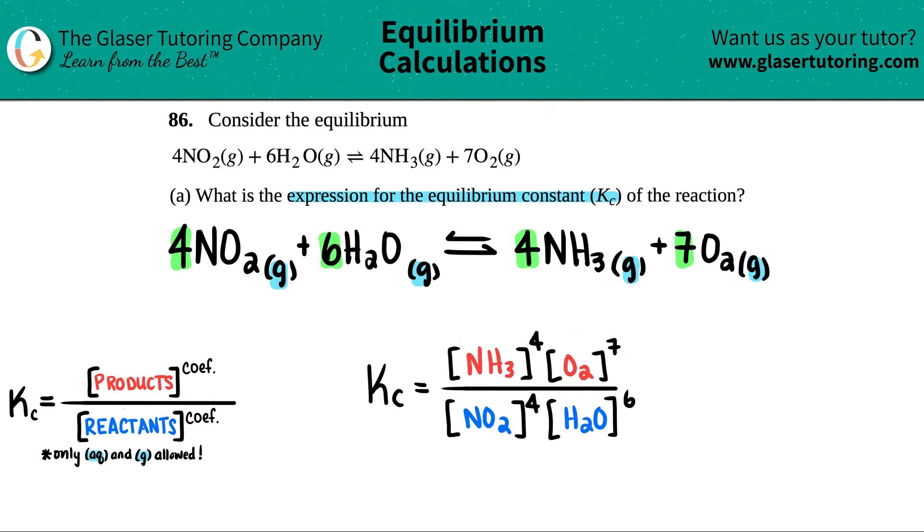And we're done! So this is the expression for the Kc for this specific equation, and we're done guys. So letter A is all done. This one was an easy peasy one. There's a few more parts coming up, so just hang tight. Letter B is coming out in a little bit.